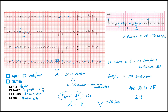In this video we talked about how to determine the rate and interpret the rhythm of an EKG for atrial fibrillation and atrial flutter. In the next video we'll cover SVT and Wolff-Parkinson-White syndrome. If you liked this video, please hit the like button, comment, and subscribe. Check out our Facebook, Instagram, and Patreon if you'd like to support us.